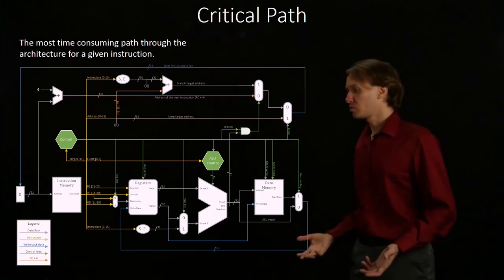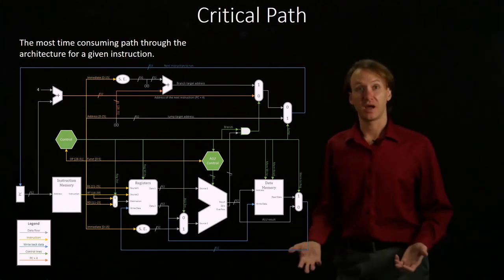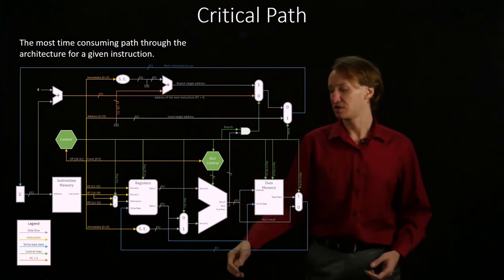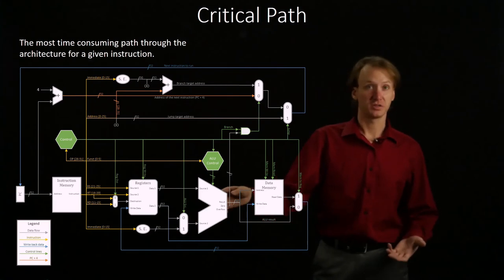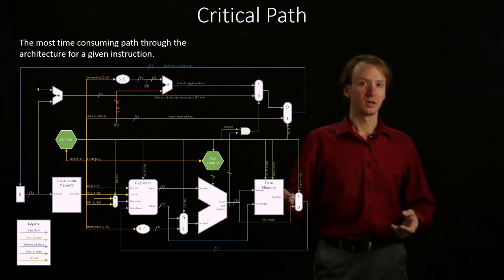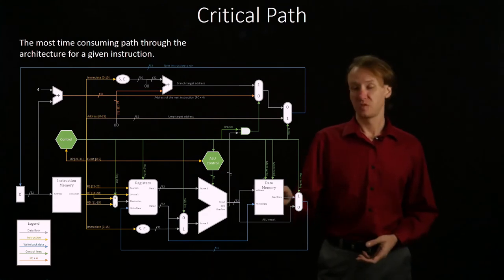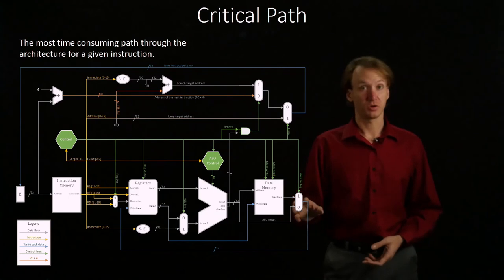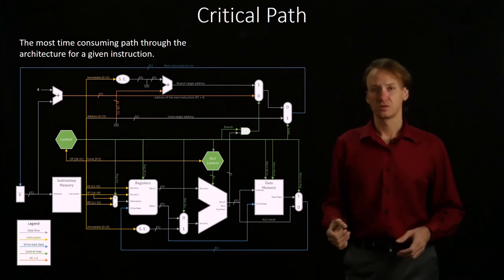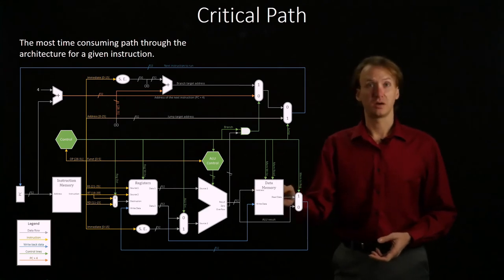If we look at a load word instruction, this one has some extra stuff. We've still got a lot of the same stuff we did with the add-immediate instruction. We'll have the program counter, instruction memory, registers, sign extension unit. We do an add-immediate instruction effectively. But then we send that address to the data memory. Now we have the additional cost of the data memory as well. Then the data memory will send the results to the mem2reg multiplexer, which will send the results back to the registers. A load word isn't going to be too much different from an add-immediate, except that we'll have to use the data memory as well.